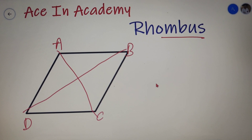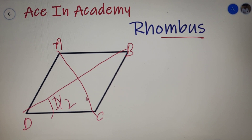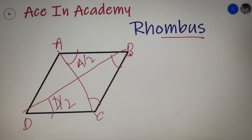The fifth property of a rhombus is that the diagonals bisect the angles at the vertices. So if the complete angle is D, then this angle is equal to D/2; if the complete angle is A, then this angle is equal to A/2. The same applies for the other angles — they will be B/2 and C/2 respectively.